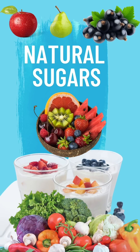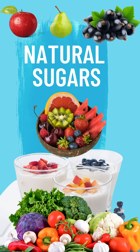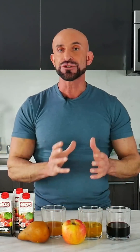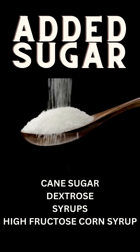Sugar naturally occurs in fruit, dairy, and vegetables. This is different from added sugars. We want to limit added sugars, but naturally occurring sugar is part of a well-balanced eating pattern. Added sugar is the term used when sugar is added to a food or a product.